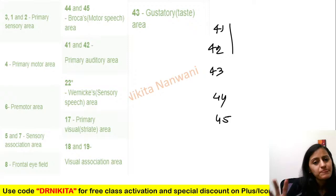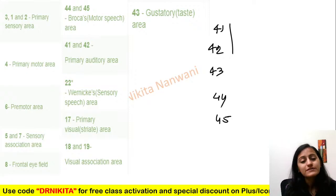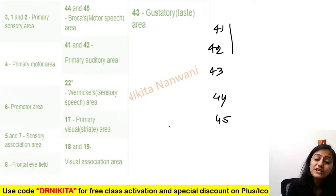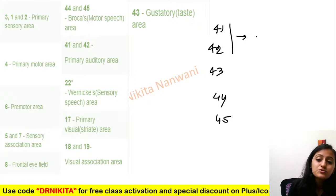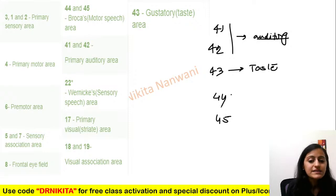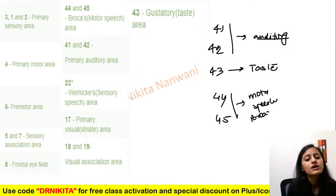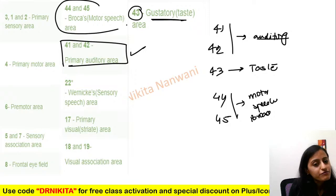To remember areas 41 to 45, here is a story: your friend finds a new food outlet, tastes it, comes back and tells you it's good — that is listening, auditory, area 41-42. You go and taste — that is gustatory, area 43. You come back and express all your complaints — that is the motor speech, Broca's area, 44-45. First listen, then taste, then speak — 41, 42, 43, 44, 45.